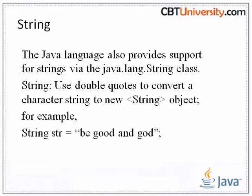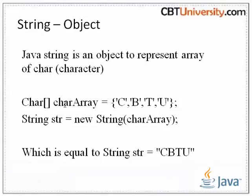In addition to the 8 primitive data types listed above, the Java language also provides support for strings via the java.lang.String class. Use double quotes to assign a character string to a new string object. For example, this is a character array with characters c, b, t, u — we are converting this into a string with a new String instance, passing this character array. This is equivalent to defining a string directly.